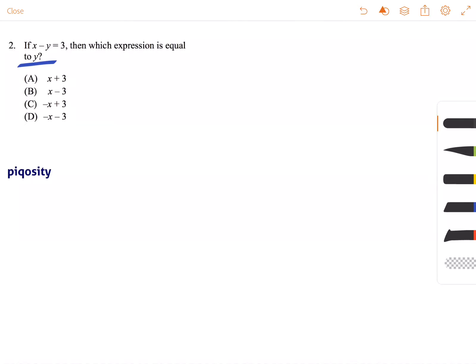Or in other words, we need to figure out what y equals. The expression is going to be this part here. So how do we go about doing that? First, let's rewrite our equation out. So x minus y is equal to 3.